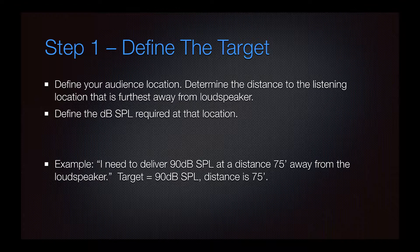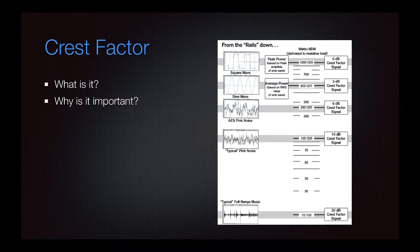Let's dive right into step one: defining the target. This is relatively simple — you decide how loud you want the sound system to be at the furthest distance away. In this example, I've decided I want to deliver 90 dB SPL at a distance of 75 feet away from the loudspeaker. So our initial target is 90 dB SPL at 75 feet. This is arbitrary and could change based on your specific project.